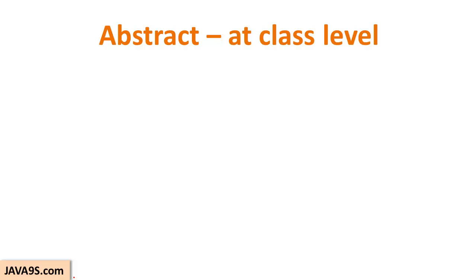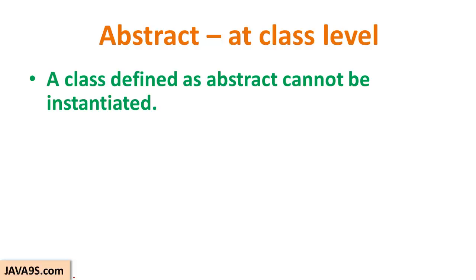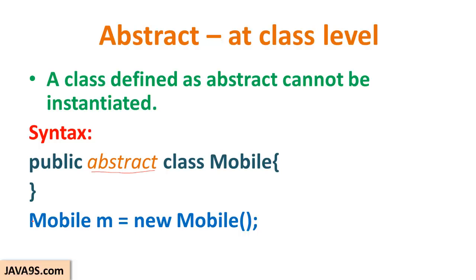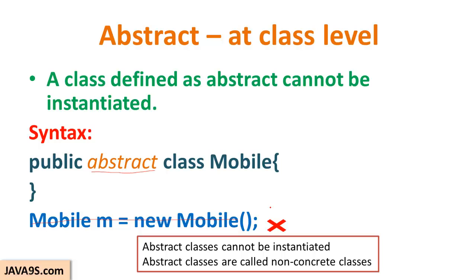Getting into the abstract class, we'll be looking at the class level. A class defined as abstract cannot be instantiated — this is the first rule you have to remember. When you mark a class as abstract you cannot create objects of that type. The syntax has the access modifier followed by the non-access modifier 'abstract', then the class declaration. Abstract classes cannot be instantiated.